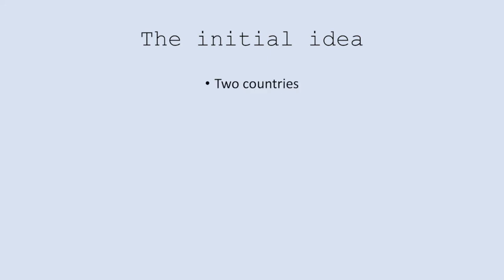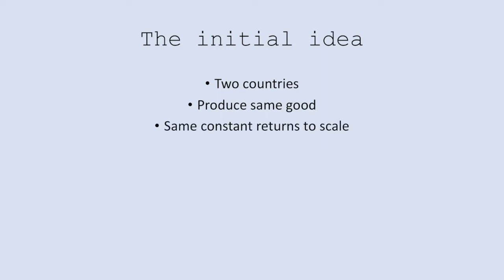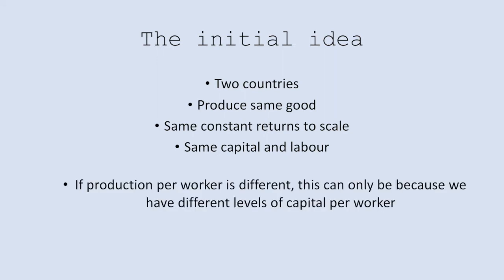The idea goes something like this. If we make assumptions along the lines of the Solow growth model, and we have two countries producing the same good with the same constant returns to scale production, with output coming from the same homogeneous capital and labour inputs, then if production per worker differs between these two countries, it must be because they have different levels of capital per worker. We've just ruled every other possible explanation out using our initial assumptions.